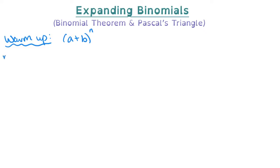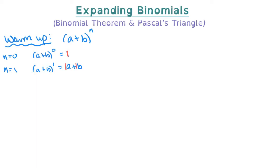For starters, let's have n equals 0. A plus b to the 0 power is 1. Now let's do n equals 1. A plus b to the 1 is just a plus b. I'm going to write this as 1a and 1b, because I want us to watch what happens with these coefficients as n gets bigger.